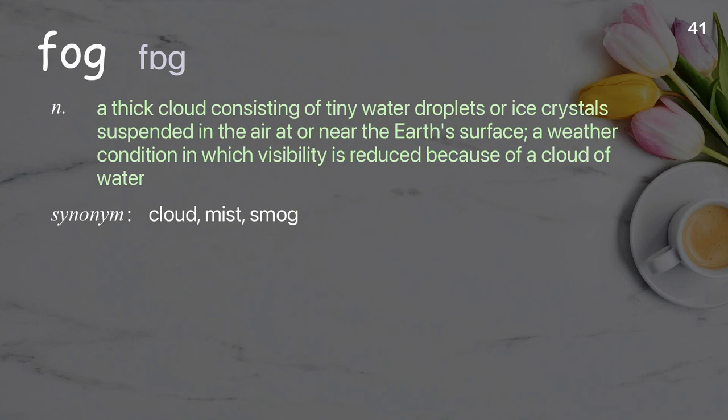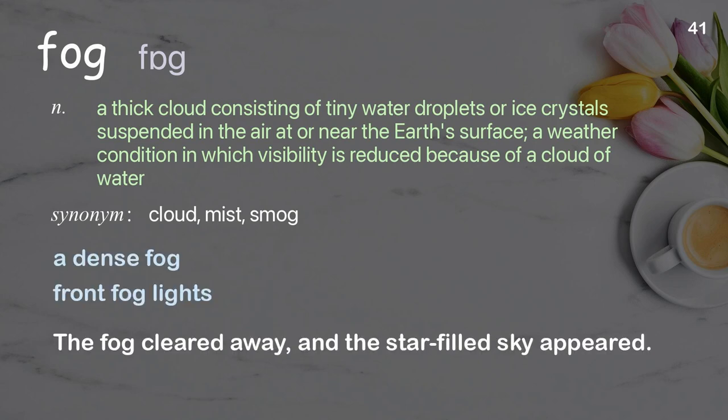Fog: A thick cloud consisting of tiny water droplets or ice crystals suspended in the air at or near the Earth's surface; a weather condition in which visibility is reduced because of a cloud of water. Examples: A dense fog. Front fog lights. The fog cleared away, and the star-filled sky appeared.